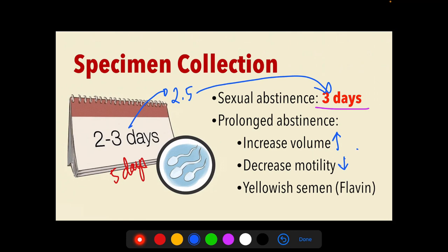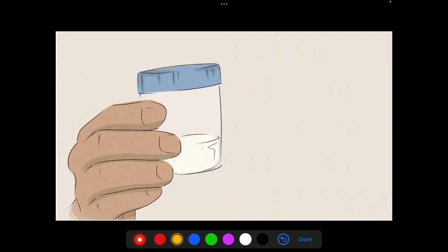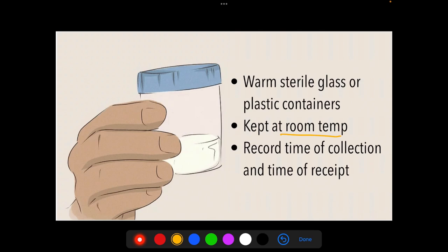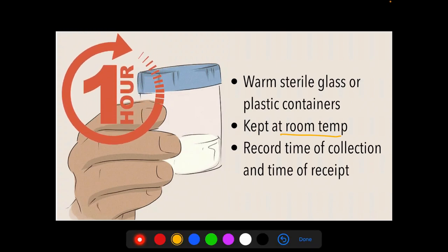The patient must be instructed to empty his bladder before ejaculation. The substance flavin gives semen a yellowish color. For semen collection, the laboratory should provide a warm sterile glass or plastic container with a screw top — usually pre-weighed. Semen should be kept warm during transport; if not possible, it must be kept at room temperature and delivered to the laboratory within one hour of collection. The time of collection and receipt must be recorded.